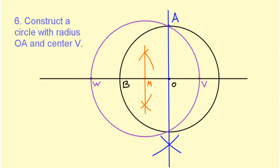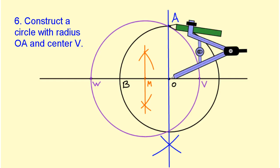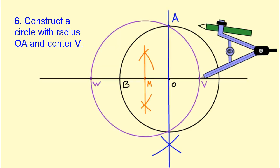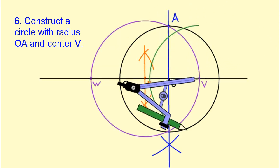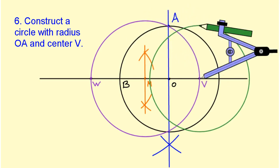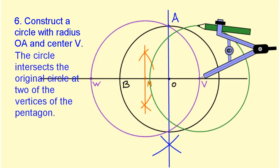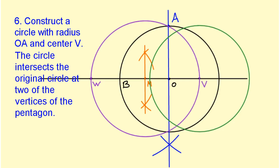Next we are going to construct a circle with radius OA, but the circle will be centered at point V. So I need to take my compass and measure the distance from O to A, and then move the point of my compass over to V and draw my circle. This circle intersects the original circle at two of the vertices of the pentagon.